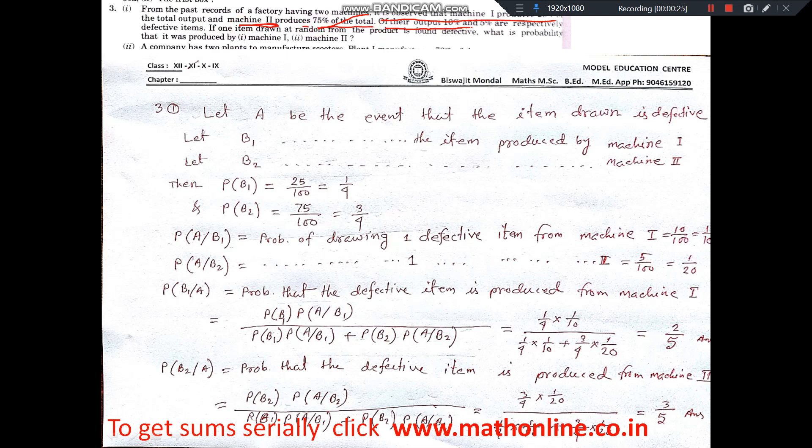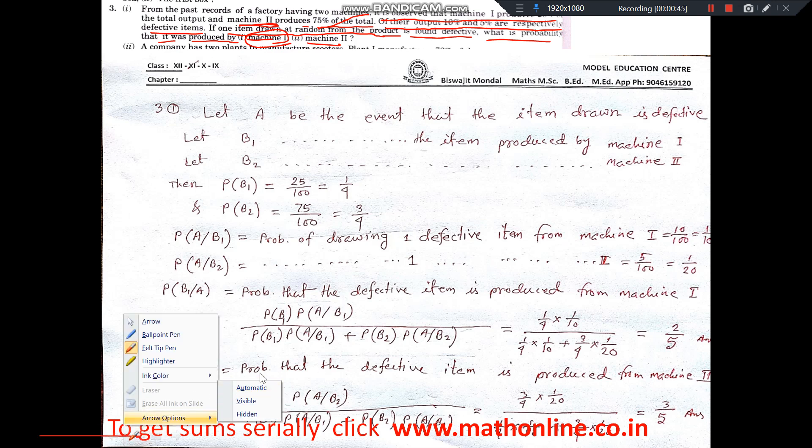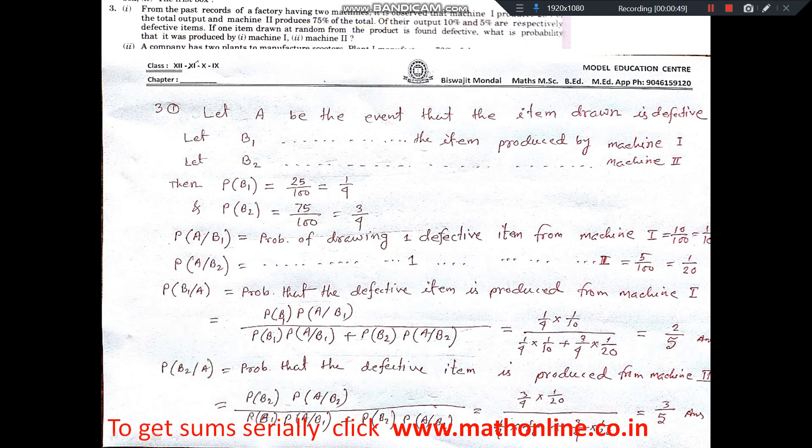Of their output, 10% and 5% are respectively defective items. If one item drawn at random is found defective, what is the probability that it was produced by machine 1 or by machine 2? These are the probabilities we have to calculate for the defective item.